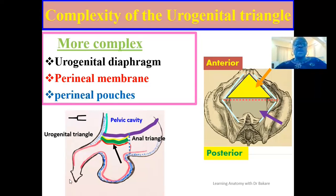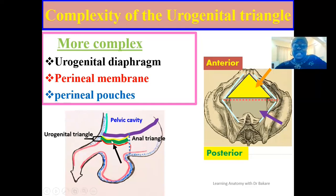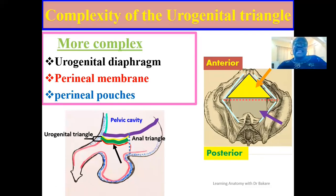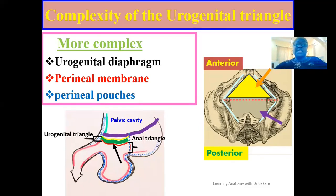Going back to this image, this is where we have the deep perineal pouch. This deep perineal pouch is located between the superior and the inferior fascia of the urogenital diaphragm. The fascia covering it above and below marks the superior and inferior limits of the deep perineal pouch. The deep perineal pouch can literally mean the urogenital diaphragm, because the structure located within this region is the urogenital diaphragm. Going more inferiorly, between the perineal membrane — which is the inferior fascia of the urogenital diaphragm — and the colles' fascia, we have the superficial perineal pouch.